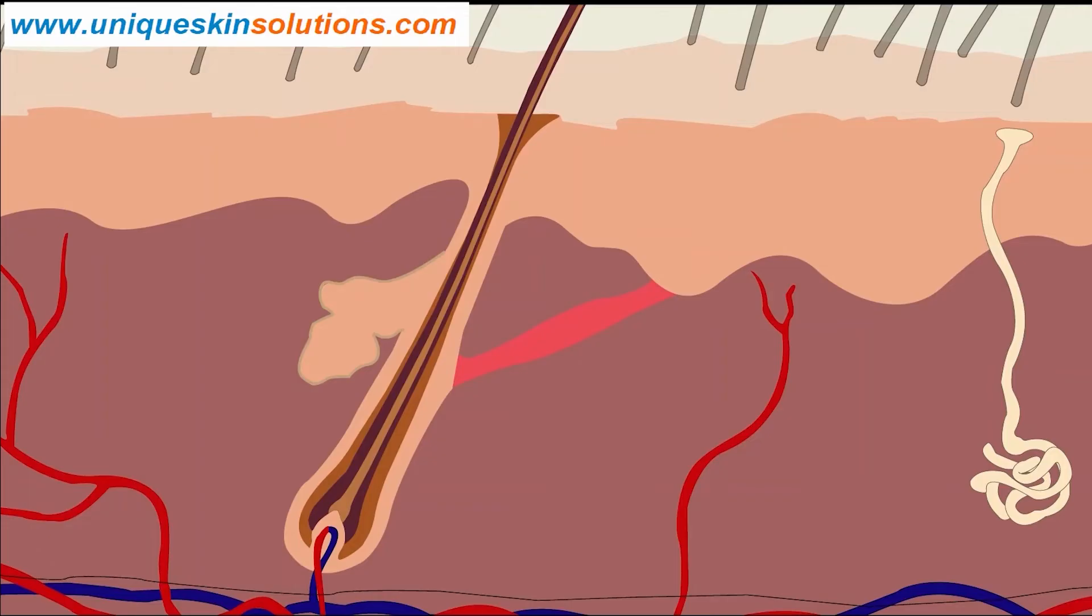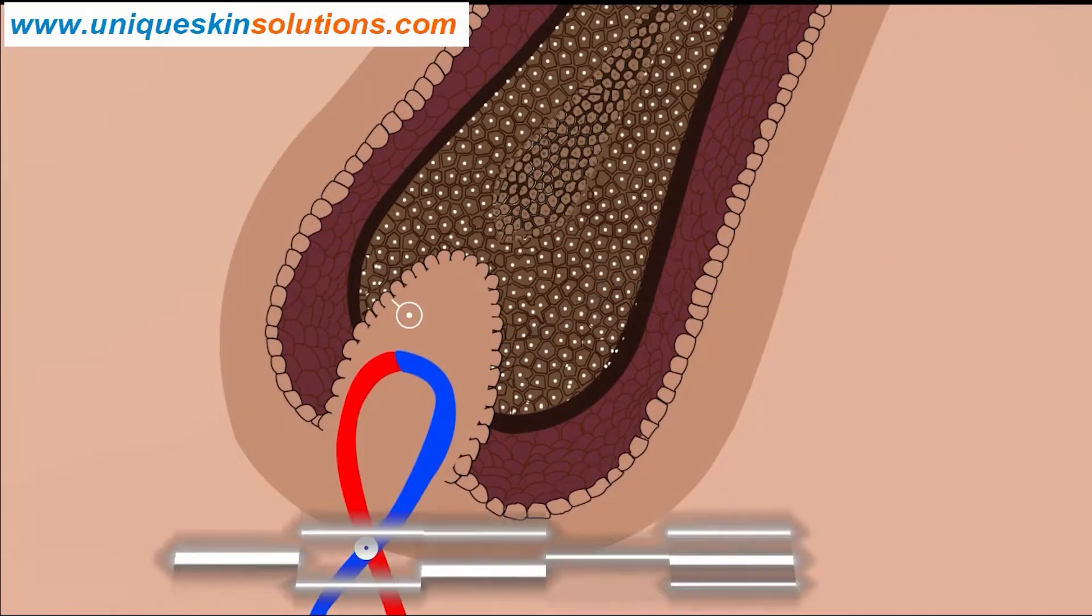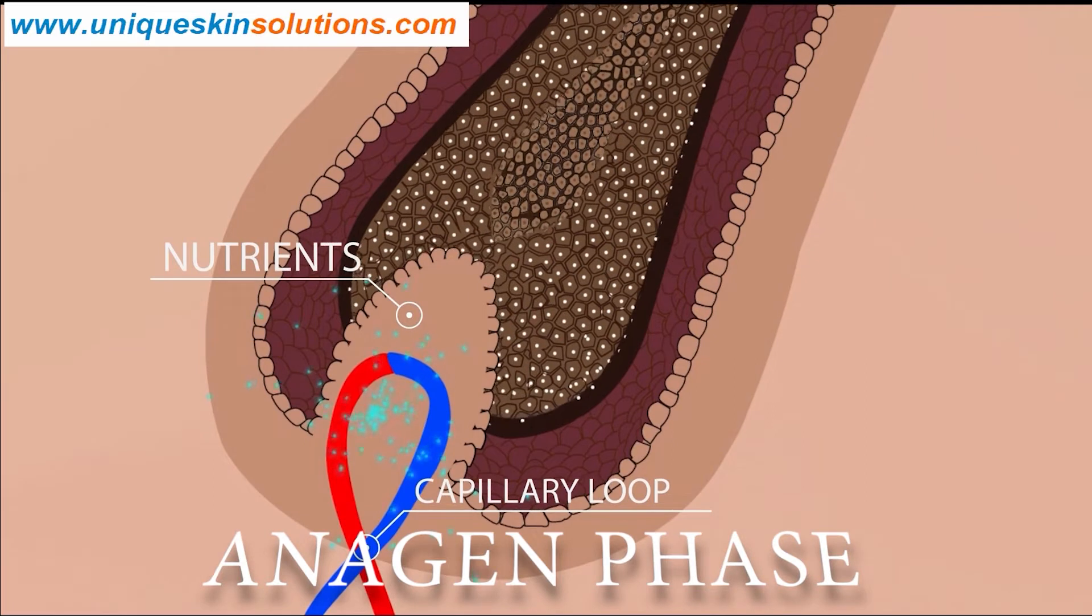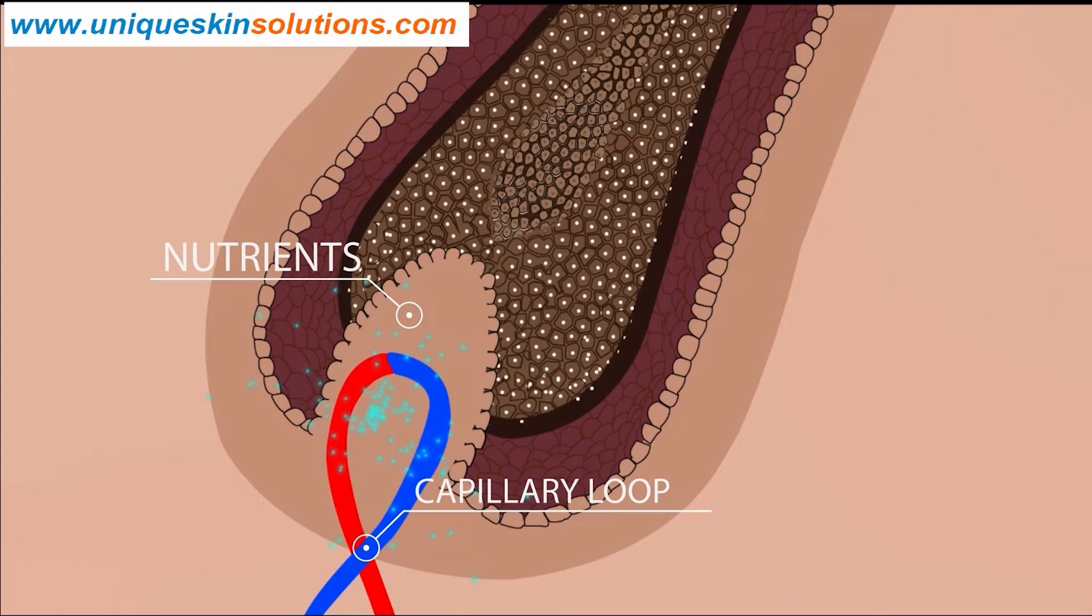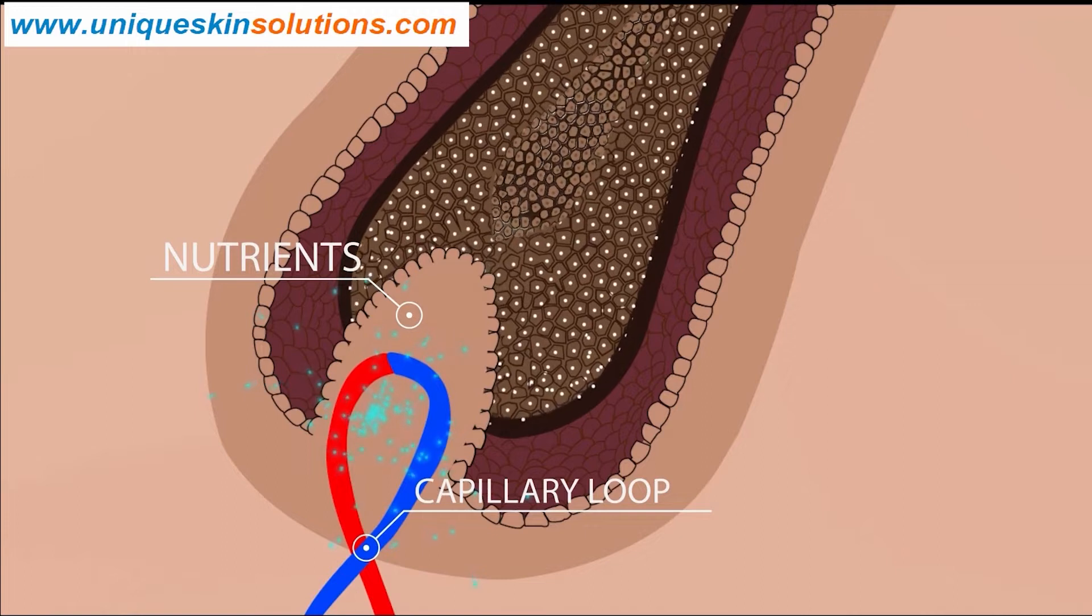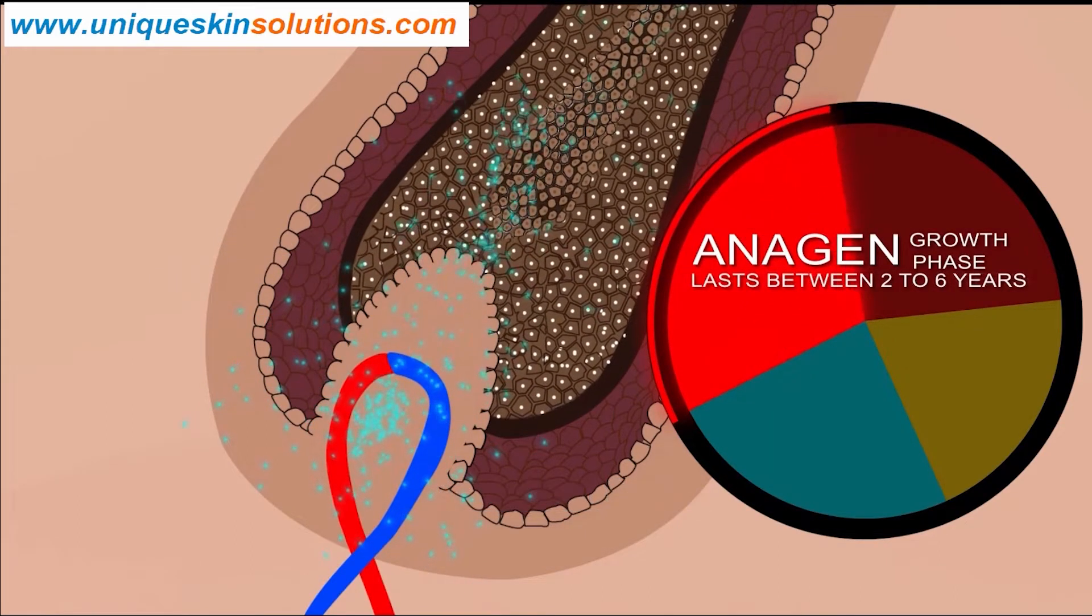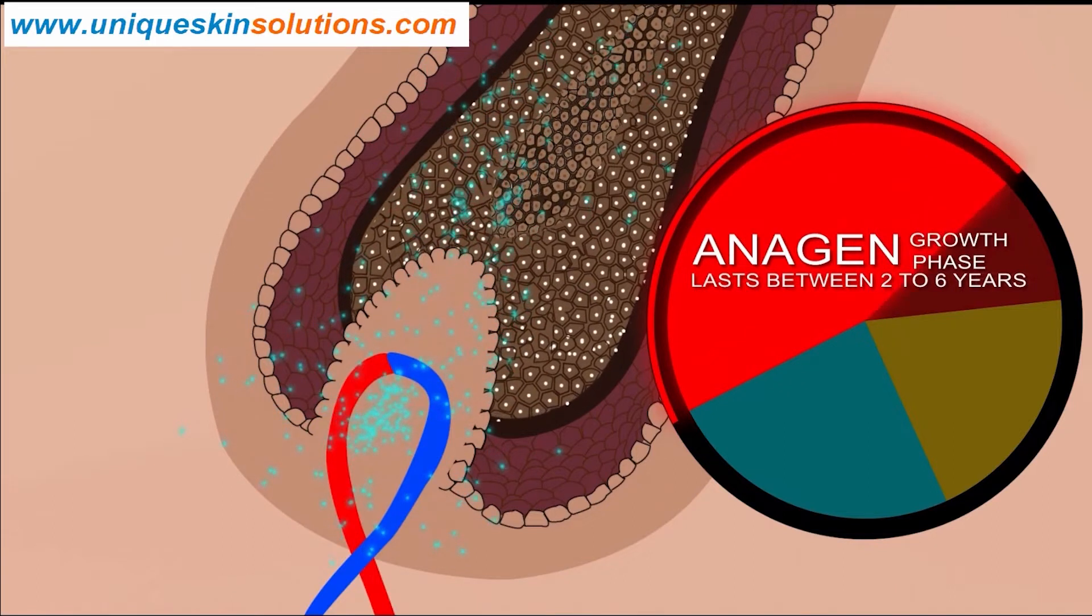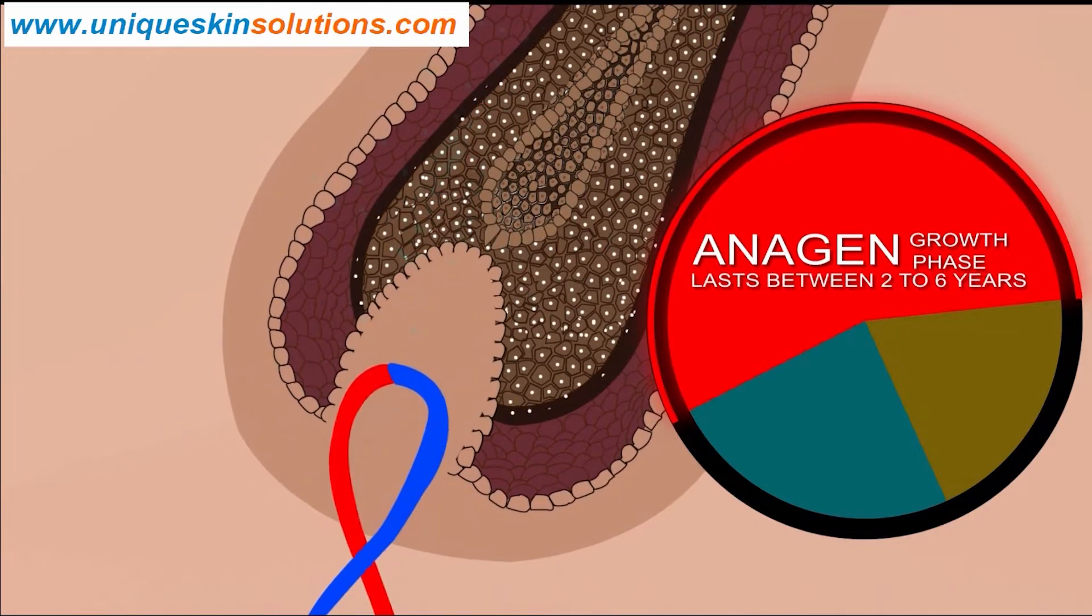Cells of the hair matrix are responsible for hair growth and receive nutrients from the capillary loop from dermal papillae. During the anagen phase or growth phase, the hair matrix actively proliferates new cells. New cells are pushed upward and they differentiate to produce hair shaft. Up to 85% of hairs in normal scalp are in this stage. After 2-6 years of anagen phase,